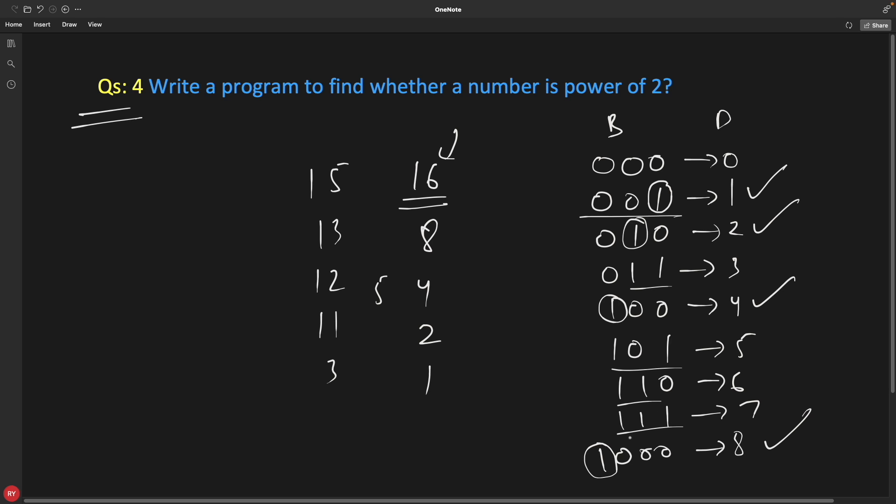Rest have more than one set bit - two, two, two, three - so they are not power of 2. Now it becomes easy: you just have to find how many set bits are in the binary representation. If you have 16, that's one followed by four zeros.